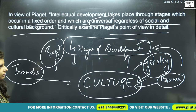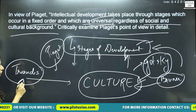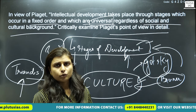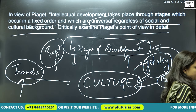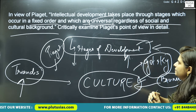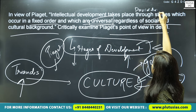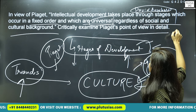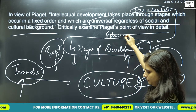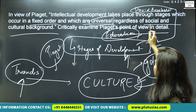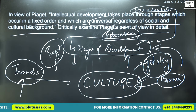Triandis is also an important psychologist here — he talks about culture as a very important part of intellectual development. You can also talk about David Ausubel, who said that apart from culture, education also plays a big role in intellectual development. This is how Piaget's theory was critically examined.